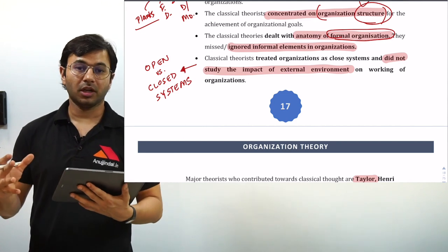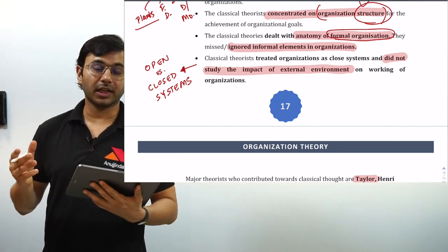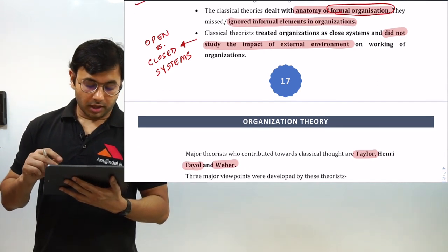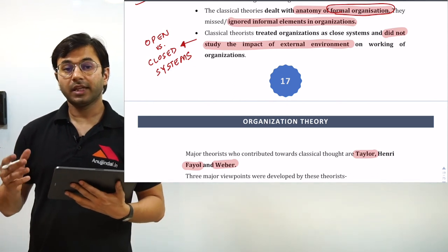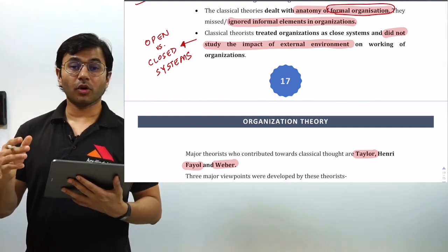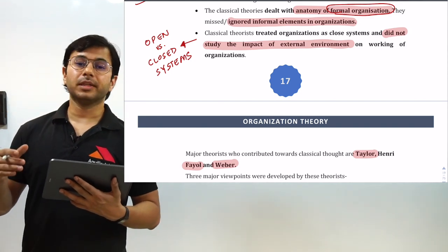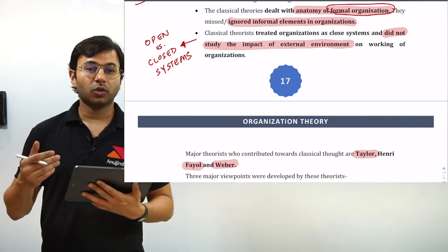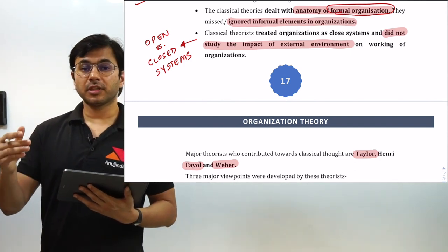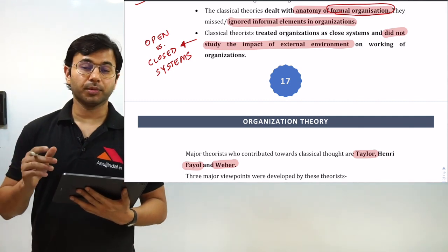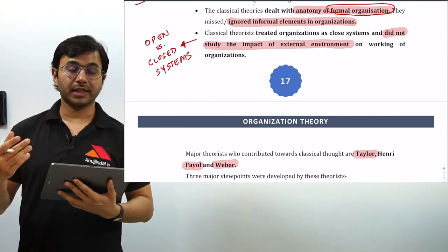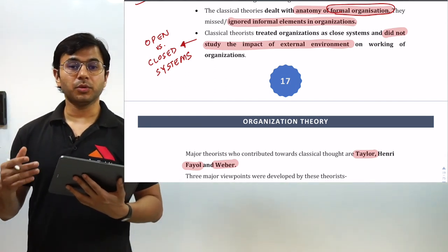When it comes to the social systems of people working together, classical theories did not concern themselves about that because they thought it was not important. Classical theorists treated organizations as closed systems — they did not think about the open systems approach because at that point in time, external factors were not contributing a lot to what organizations were doing. For example, electric vehicles are given a lot of boost these days, but back then that kind of external push was not available, so organizations were comfortably working as closed systems.